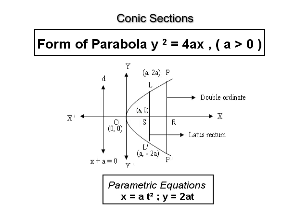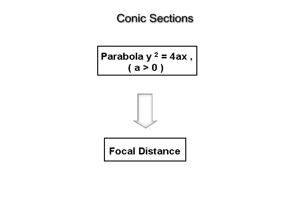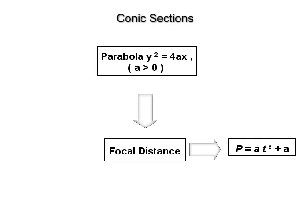The parametric equations of the parabola are x = at² and y = 2at, where t is a parameter. From this we get dy/dx = 1/t. Geometrically, the parameter of a point on the parabola represents the reciprocal of the slope of the tangent to the parabola at that point. The focal distance of a point P on the parabola y² = 4ax is x₁ + a. If t is the parameter of P, then the focal distance of P is at² + a.